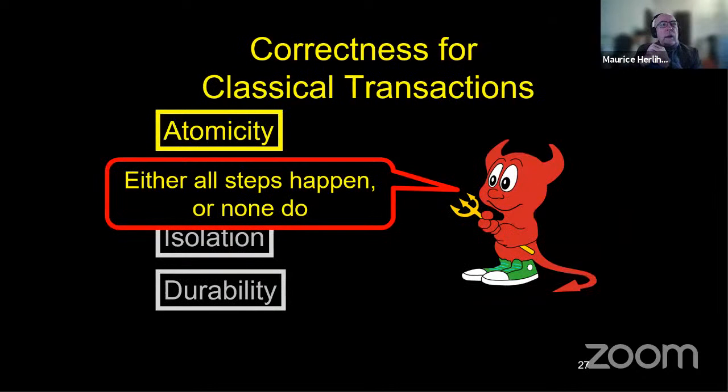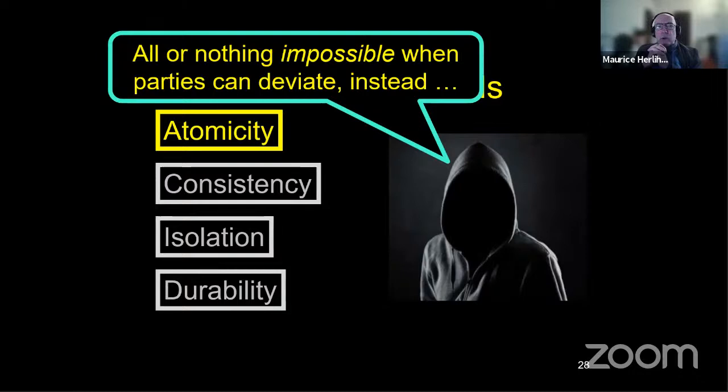So all we're going to do is say that you're conforming or you're deviating. And for all I know, I might be conforming, but for all I know, everybody else in the deal is deviating. Now, returning to the classical notions of correctness, the notion of atomicity is key. So atomicity says either all steps happen or none do. I launched a transaction and it commits and everything happens or it aborts and nothing happens. But all or nothing is impossible to enforce when the transactions are executed by autonomous parties who can't be constrained to follow the protocol.